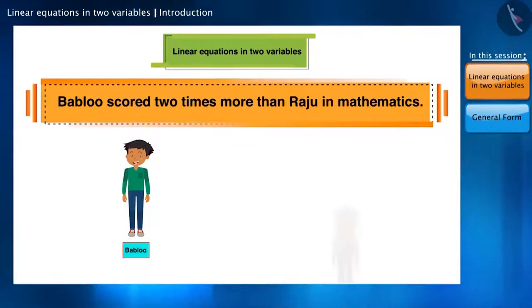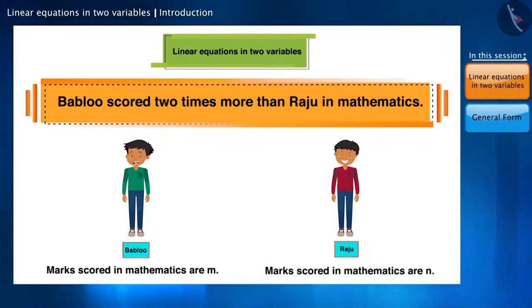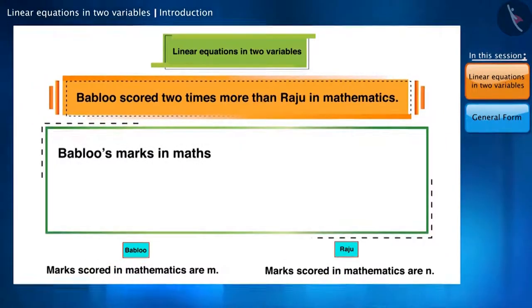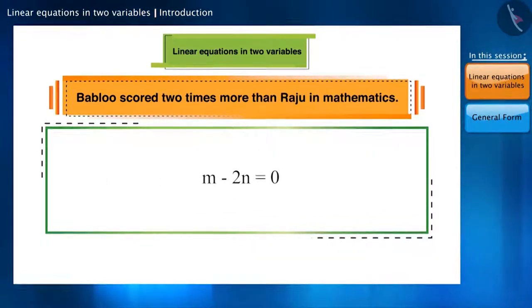Let's look at another example. Babloo scored two times more than Raju in mathematics. Suppose Babloo scored M marks in maths and Raju scored N marks. Note that we can use any other alphabet instead of M and N. Given that Babloo scored two times more than Raju in maths, we can represent it like this. We can write it as M minus 2N is equal to zero as well, and we get another equation.